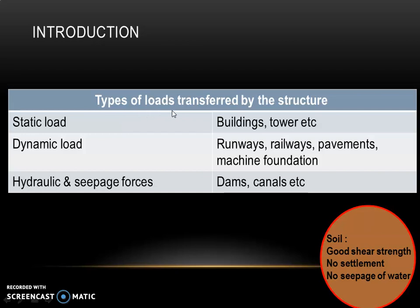There are various types of loads transferred by different types of structures. For example, static load — that is the load at rest — is transferred by buildings, towers, etc., which are stationary. Whereas dynamic load is offered by runways, railways, pavements, and machine foundations. Due to movement of vehicles and operation of machines, dynamic load is exerted on the soil.